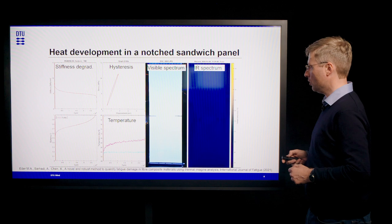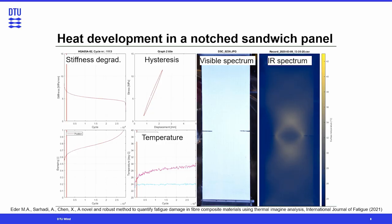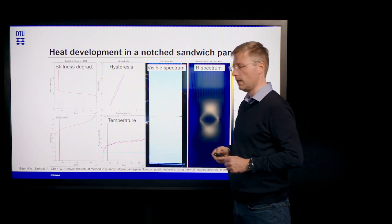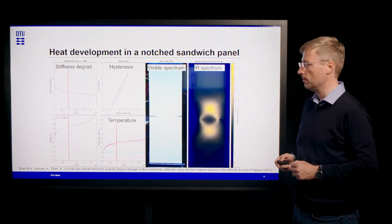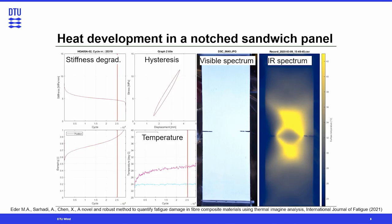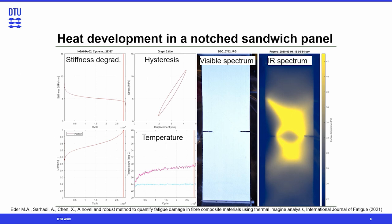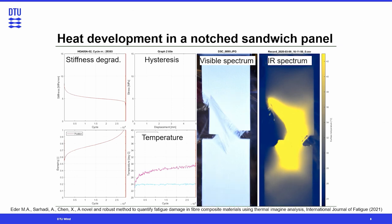In this video I am showing a sandwich panel with two composite skin layers with two notches on either side, subject to cyclic loading conditions in the vertical direction. You can see the stiffness degradation curve, which looks exactly as I have shown in the first part of my lecture about the fatigue phenomenon. We also see the hysteresis, and the area of the hysteresis is actually a measure of how much mechanical energy is dissipated through the fatigue damage mechanism happening in the material.